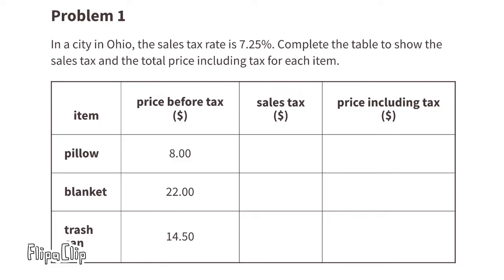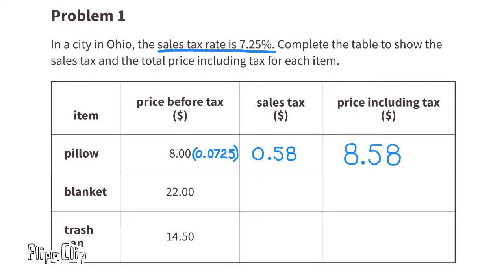Problem 1: In a city in Ohio, the sales tax rate is 7.25%. Complete the table to show the sales tax and the total price including tax for each item. Since the sales tax rate is 7.25%, we multiply the price before tax by 0.0725. Eight dollars times 0.0725 equals $0.58, or 58 cents. For the total price, add $8.00 plus $0.58 to get $8.58.